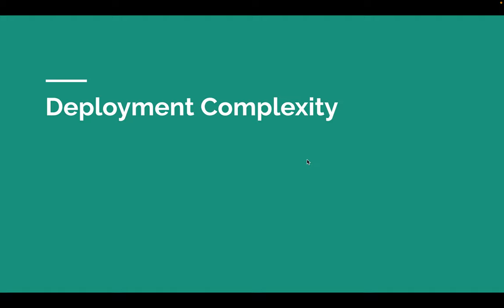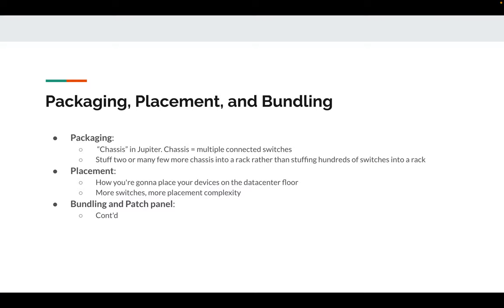To discuss complexity, let's first look at deployment complexity — literally, how hard it is to deploy your network. There are three factors affecting deployment complexity: packaging, placement, and boundary. Packaging — one example is chassis in Jupiter — means grouping multiple switches together. Instead of putting hundreds of individual switches into a rack, you bundle a few chassis together, which really reduces complexity.